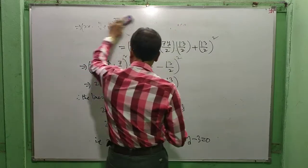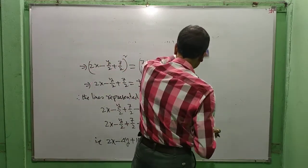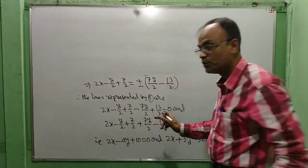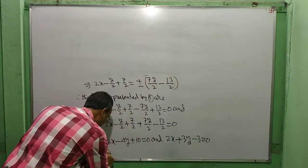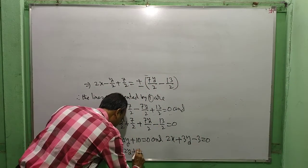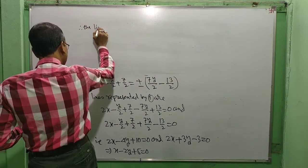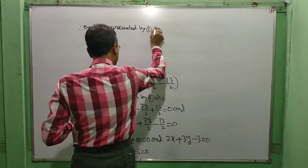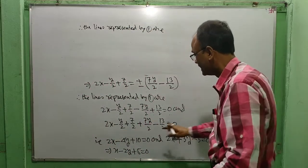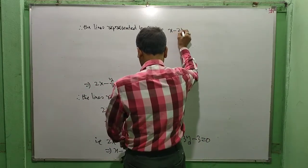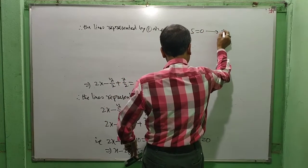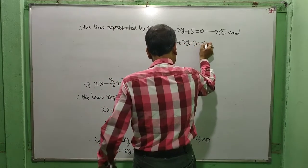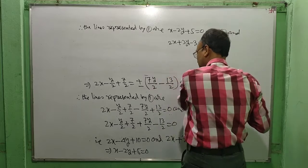Therefore the lines represented by the combined equation are: from the first equation, x − 2y + 5 = 0, and from the second equation, 2x + 3y − 3 = 0.